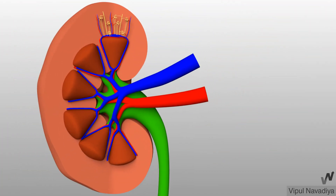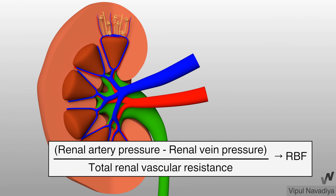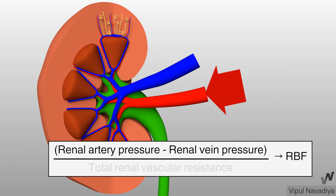You must wonder what determines this renal blood flow. It is determined by a mathematical formula: the pressure difference between renal artery and renal vein, divided by total renal vascular resistance. Pressure in the artery favours blood flow through the kidney and pressure in the vein opposes it. Hence, the more the difference between these two pressures, the more the blood flow.